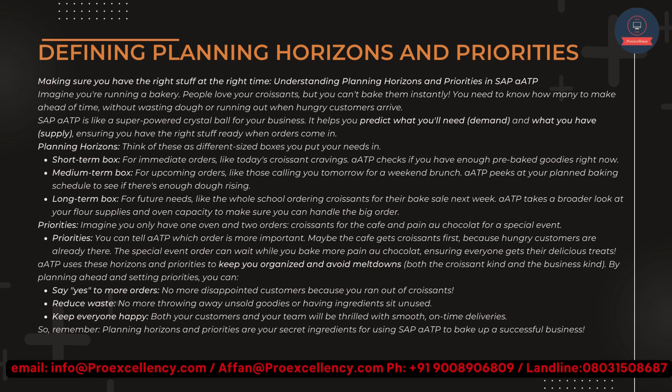Planning Horizons — think of these as different-sized boxes you put your needs in. Short-term box: for immediate orders, like today's croissant cravings — ATP checks if you have enough pre-baked goodies right now. Medium-term box: for upcoming orders, like those calling tomorrow for a weekend brunch — ATP peeks at your planned baking schedule to see if there's enough dough rising. Long-term box: for future needs, like the whole school ordering croissants for their bake sale next week — ATP takes a broader look at your flour supplies and oven capacity to make sure you can handle the big order.